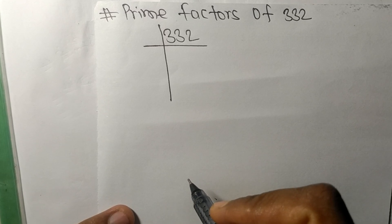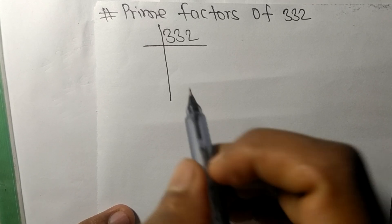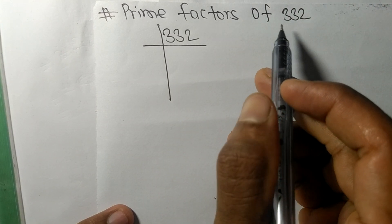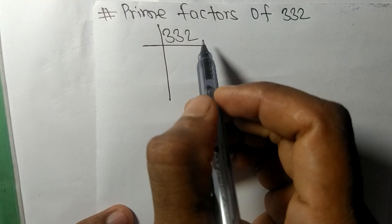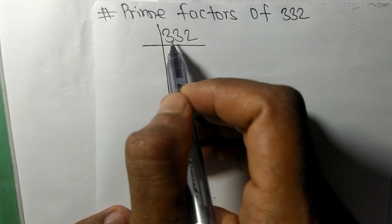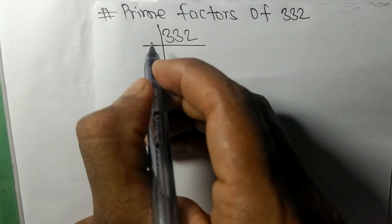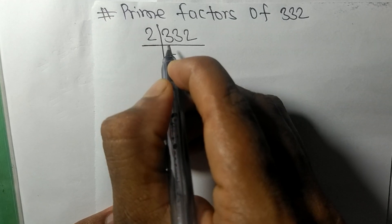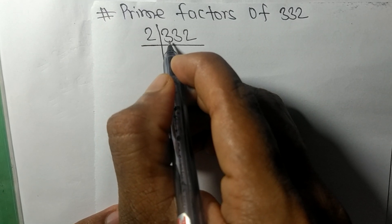So today in this video we shall learn to find the prime factors of 332. At last it contains an even number 2, so these whole numbers are divisible by 2. 2 times 1 means 2, remainder 1.